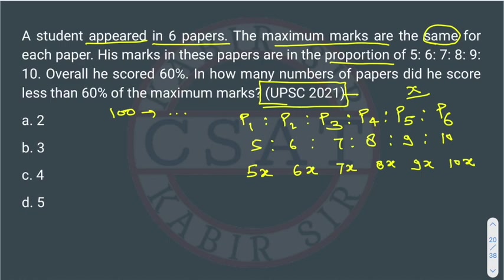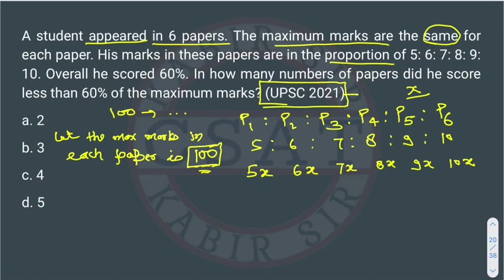Total there are six papers. Suppose for each paper, we are now assuming—as I already told you, when we are solving questions in percentage, let the maximum marks in each paper is 100. Total subjects are 6 and each subject has 100 marks, so the total marks will be 600.